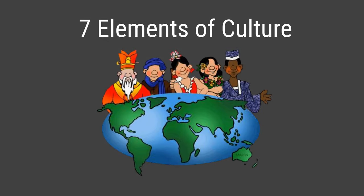Hello everyone, Mr. Tanner here. Today for social studies we're going to be looking at the seven elements that make up a culture. This is going to be a bit lengthy, so if you're feeling overwhelmed you can always pause it, rewind it, take a little break, and come back to it later. But without any further delay, let's get going.